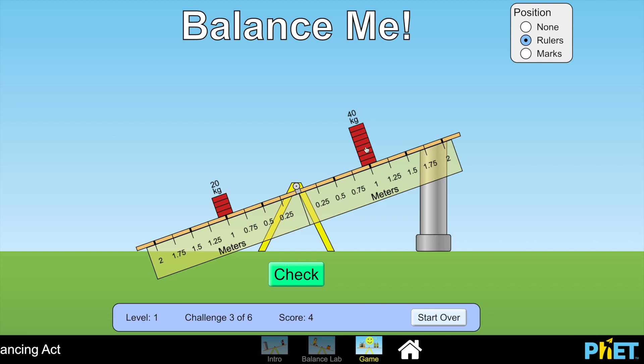Another common mistake would be to keep it at double the distance, at 2m. But this would simply create a greater turning force for the 40kg mass. Remember, moment equals force times distance. So we actually need to keep it at 0.5m.